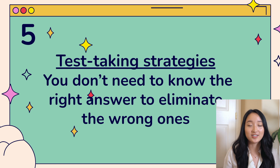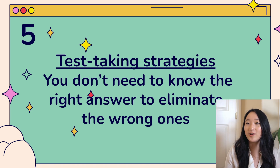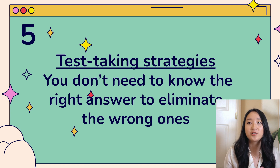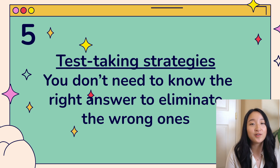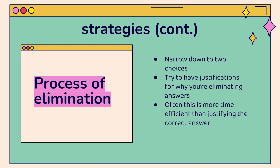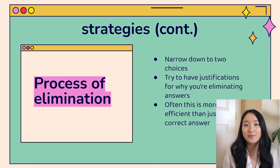Going into test-taking strategies, tip number five is that you don't need to know the right answer to eliminate the wrong ones. This was a super helpful strategy for me. A lot of times all the answer choices sound kind of correct, so it's more difficult to justify why choice A is correct. It was a lot easier for me to eliminate answer choices that were just outright wrong. Process of elimination saves you a lot of time, and most of the time you can narrow it down to two answer choices and more confidently lean toward one.